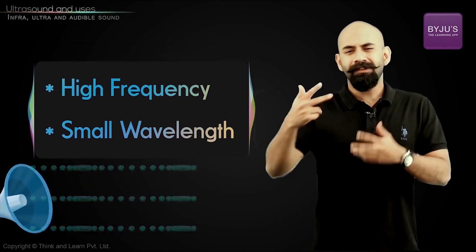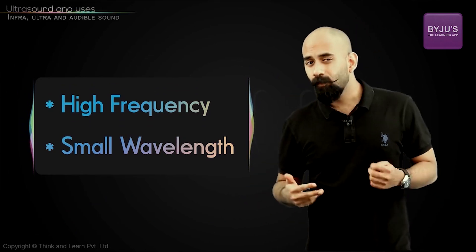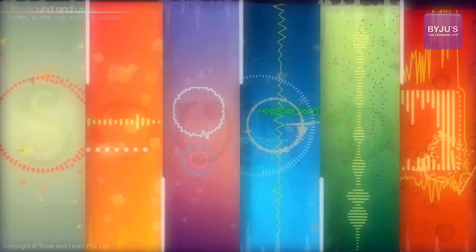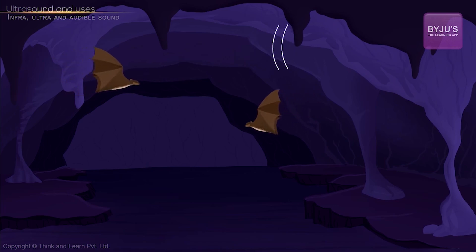Now these two properties make ultrasound or ultrasonic waves very useful. For example, bats use these waves in order to detect obstacles in their path. They send out ultrasonic waves of high frequency which hit an obstacle and come back, and they can detect where this obstacle is based on the time it takes for the wave to come back.